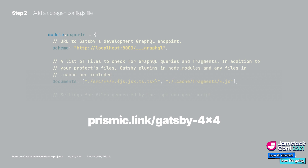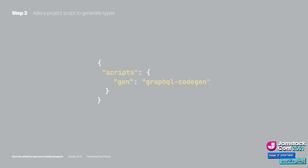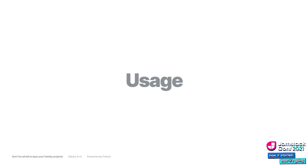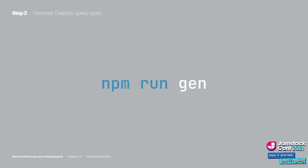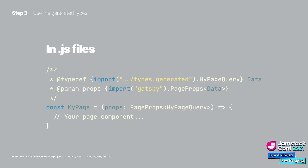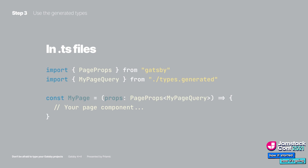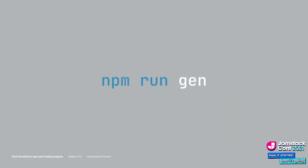Next, you're going to add a code gen config file — make sure you check out the link for the config setup specifically for Gatsby. Then we're going to add a script that regenerates the types. To use all of that, you start Gatsby with npm run develop, and once it's fully running, execute npm run gen. This will read your project files and generate TypeScript types for your GraphQL queries.